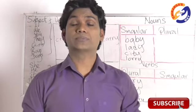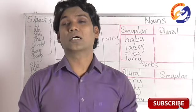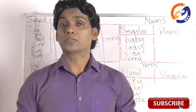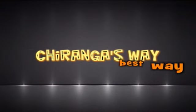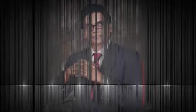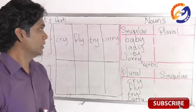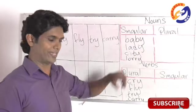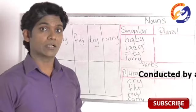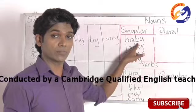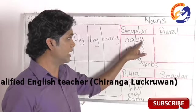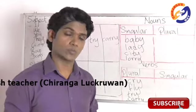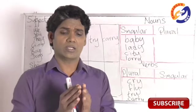Today we are discussing where to add 'ies' to make a noun plural and a verb singular. The noun ends in 'y', the verb ends in 'y' with a consonant before it — that means the last letter is 'y' and the letter before the last letter is a consonant.